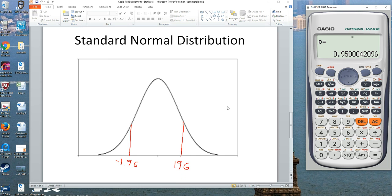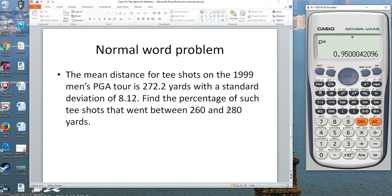Let's try an actual word problem. The mean distance for a tee shot on the 1999 Men's PGA Tour is 272.2 yards with a standard deviation of 8.12. Find the percentage between 260 and 280 yards.